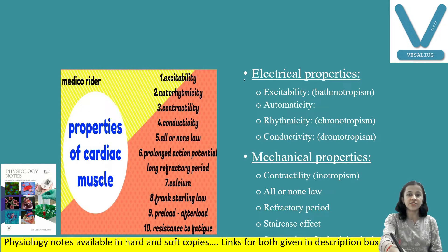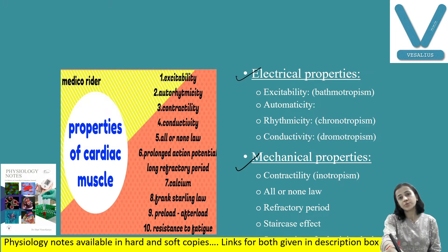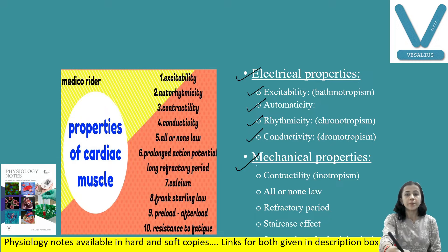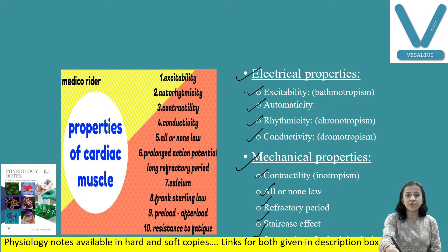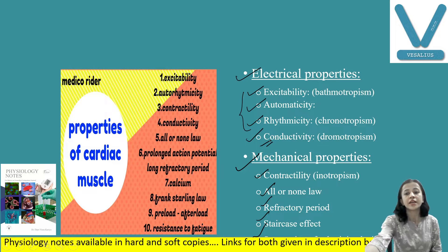As we have discussed, electrical and mechanical properties are there. Electrical properties are excitability, automaticity, rhythmicity, and conductivity. Mechanical properties are contractility, all-or-none law, refractory period, staircase mechanism, and summation. We have discussed three of these properties already. We are now discussing conductivity.